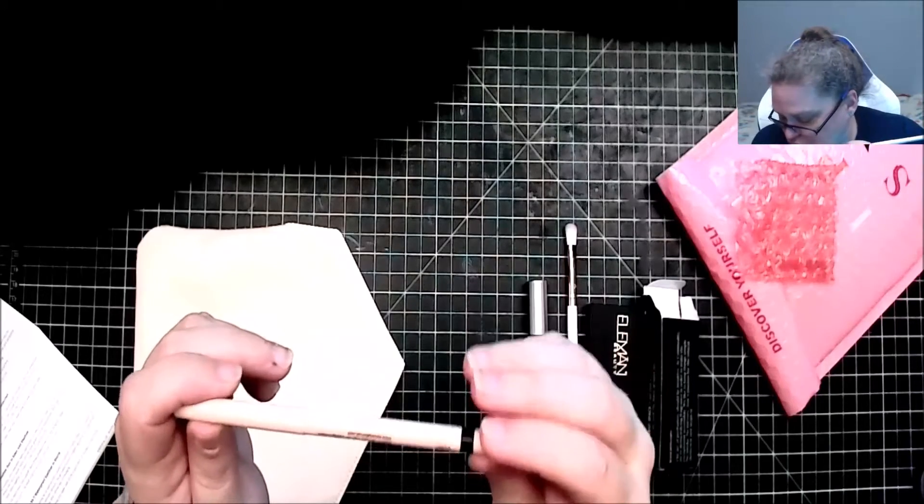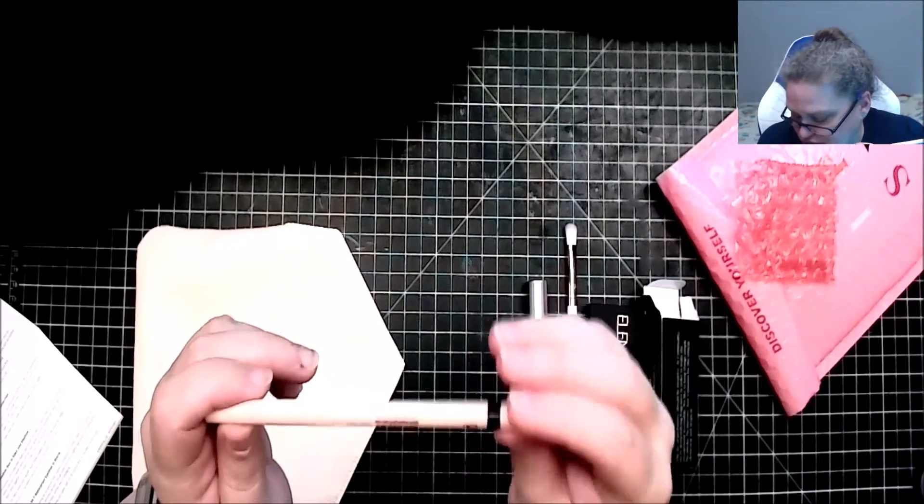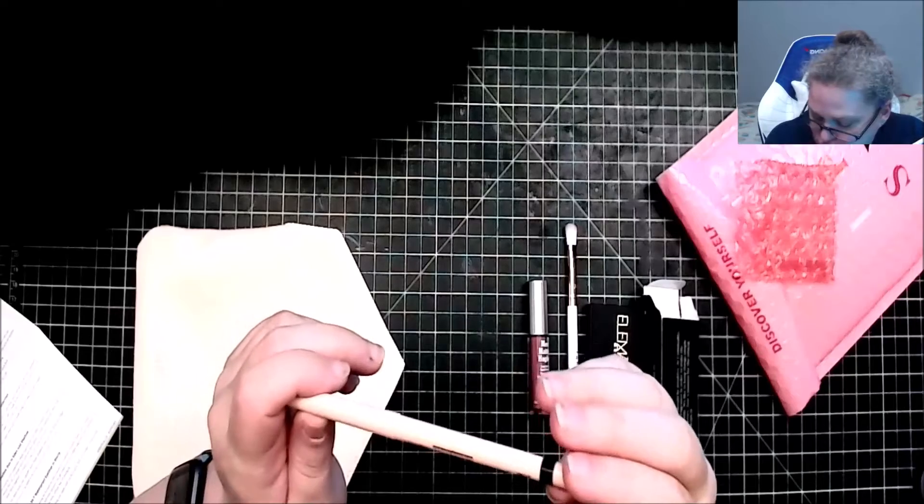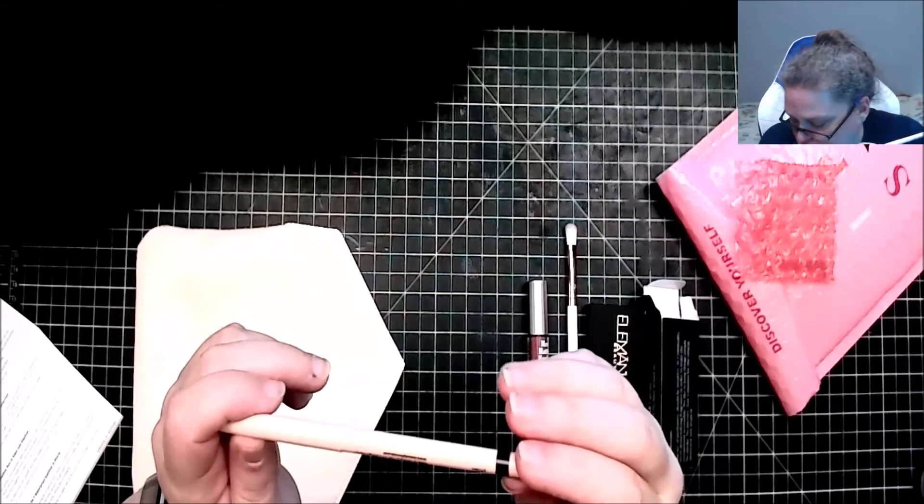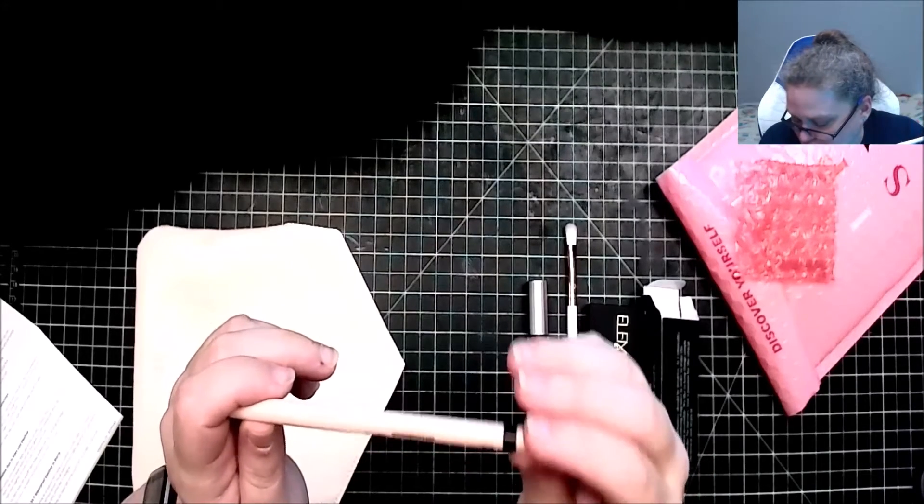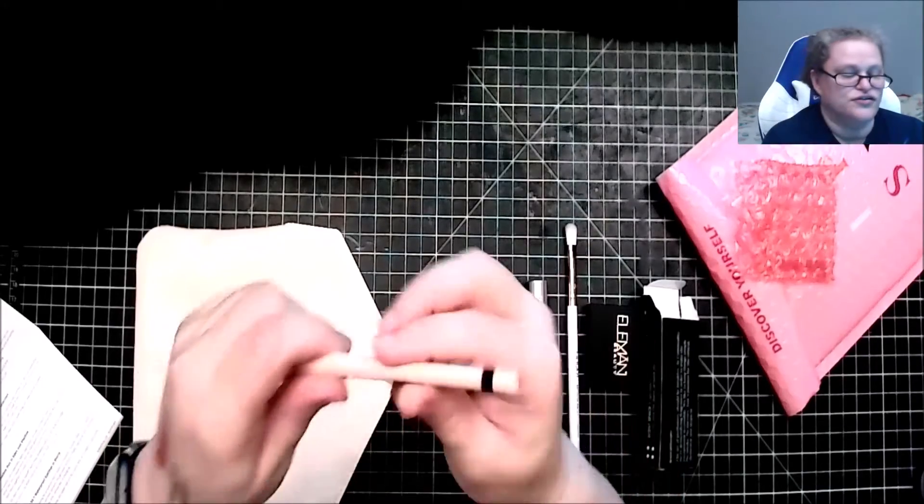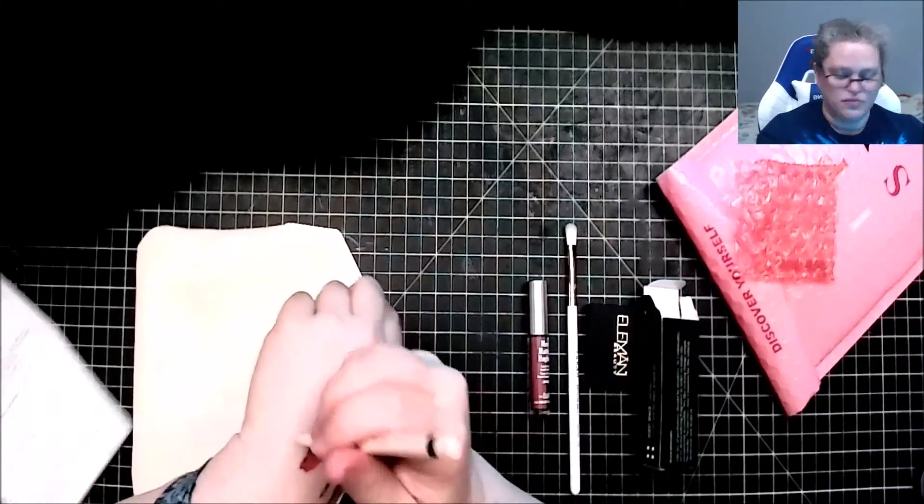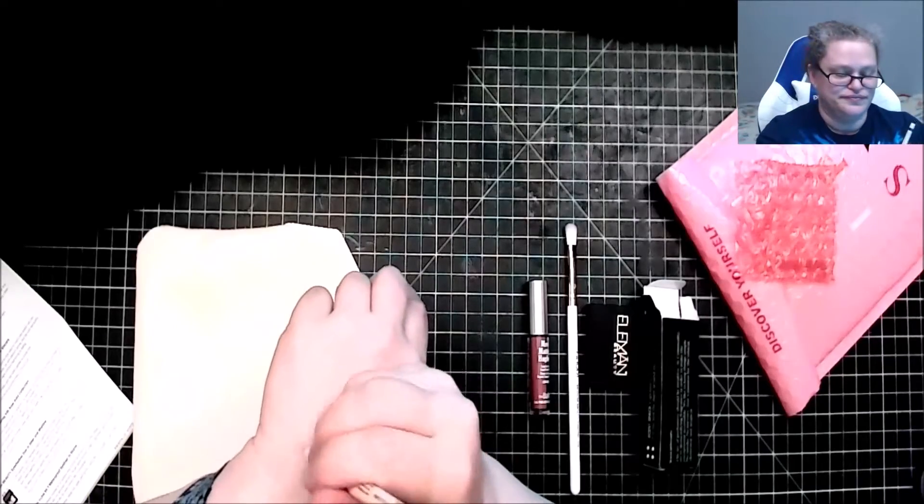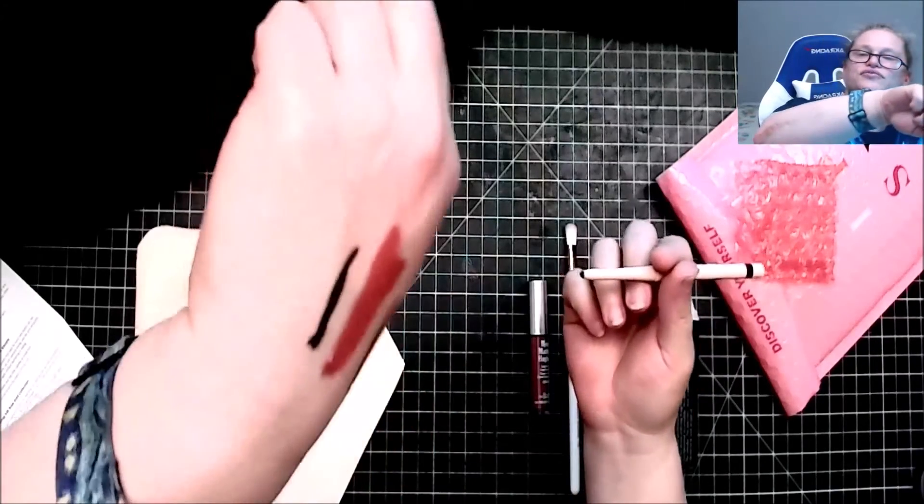We're always looking for an eyeliner that will stand up to summer humidity, sweat, and of course full days. This one definitely delivers. The gel-based formula is highly pigmented and waterproof so you can splash the day away without fear of smudging. This is $16.